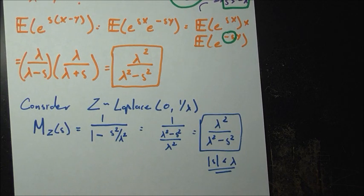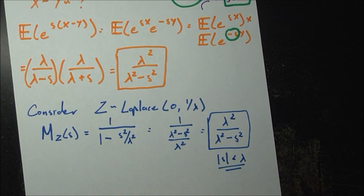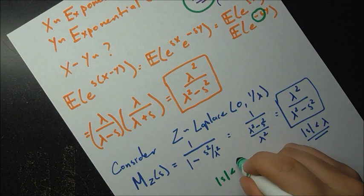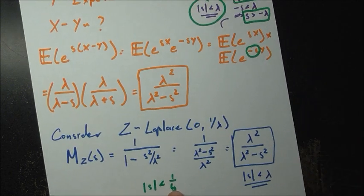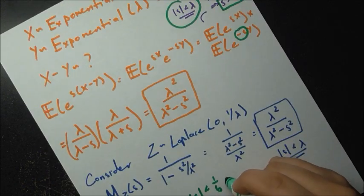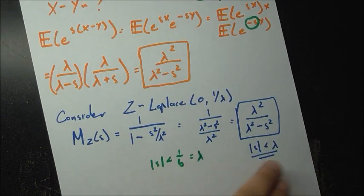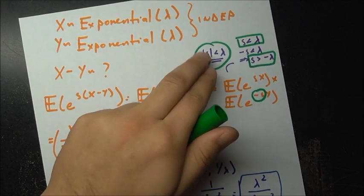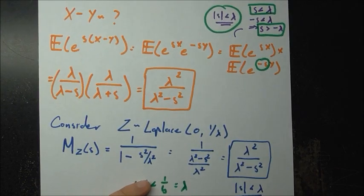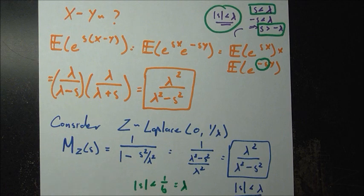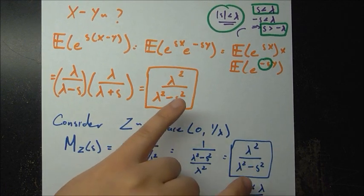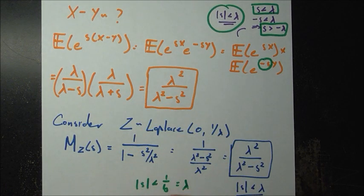Furthermore, the convergence condition for the Laplace MGF is absolute value of s less than 1 over b. With b equals 1 over lambda, we get 1 over b equals lambda, so the condition becomes absolute value of s less than lambda. This is the same condition we found for the MGF of x minus y. By the MGF inversion property, since these MGFs are identical under the same conditions, the distributions must be the same.